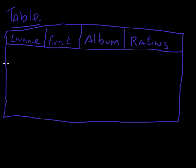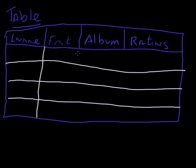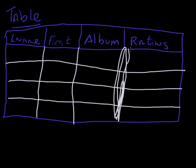So those are going to be my columns, and I'm going to start storing information in rows inside my actual table. For a group, I won't have a first name — just a last name. I'll start with an album I've been listening to a lot lately: Radiohead. They don't have a first name.